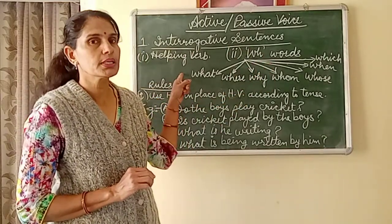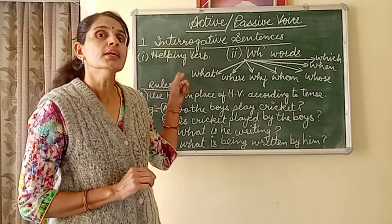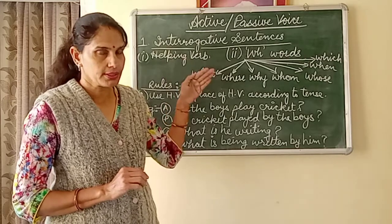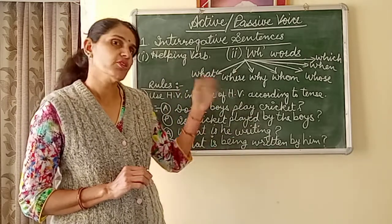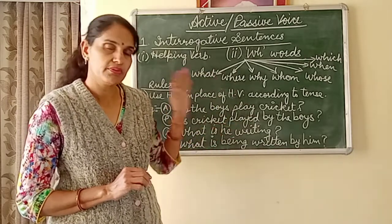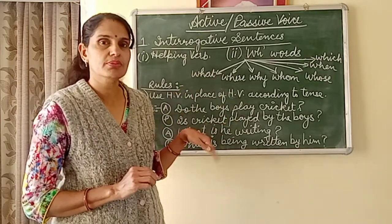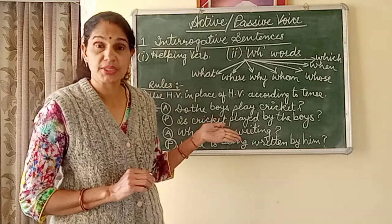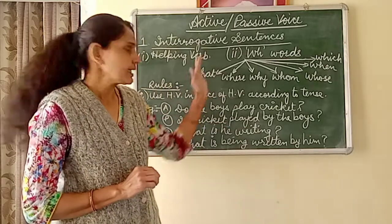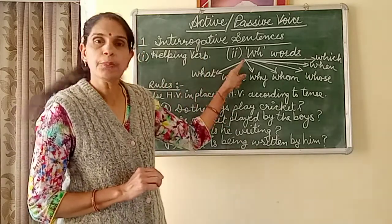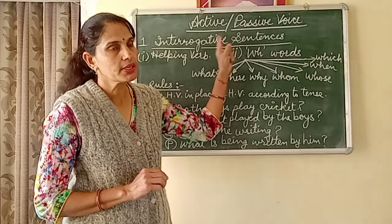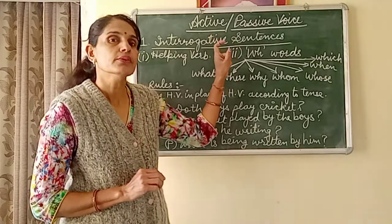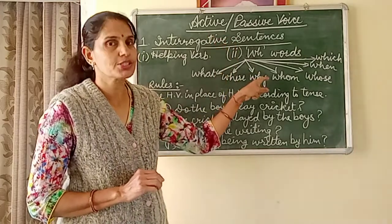We had done the helping words for present tense, past tense, future tense, and the perfect form — the whole range of tenses we had studied. Today we will see the second point: that an interrogative sentence starts with WH words.